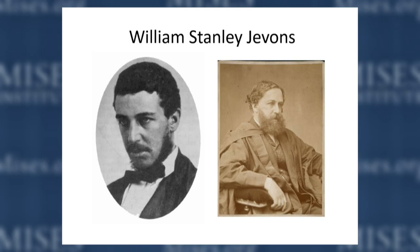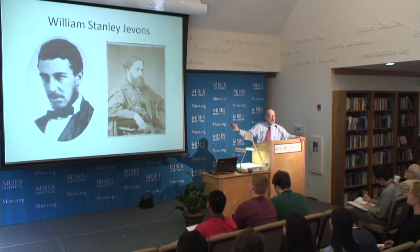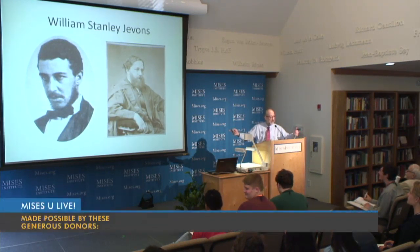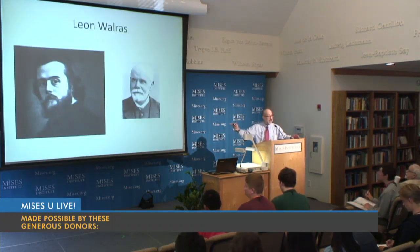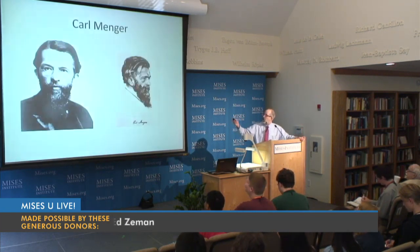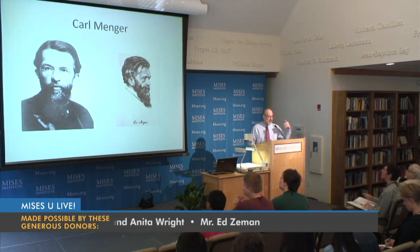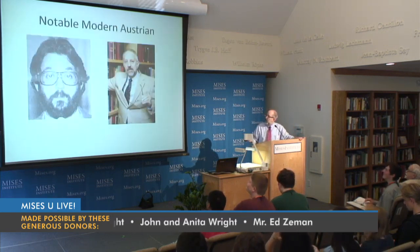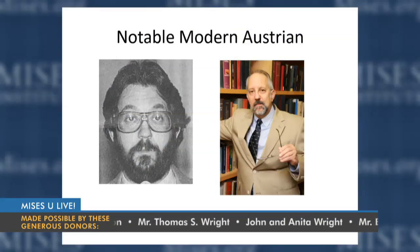Looking at some pictures: this is the young William Stanley Jevons — kind of looks like a mob enforcer; as he got older, more like the cranky guy who yells at kids to get off his lawn. Leon Walras looked kind of diabolical and scary when younger, and turns out to be your grandfather. And here's Carl Menger — dignified when he was younger, dignified when he was older. This seems to run in Austrian circles.